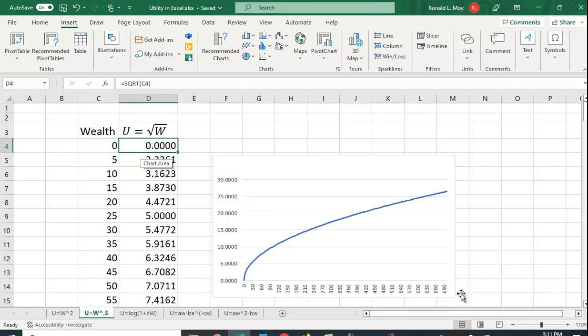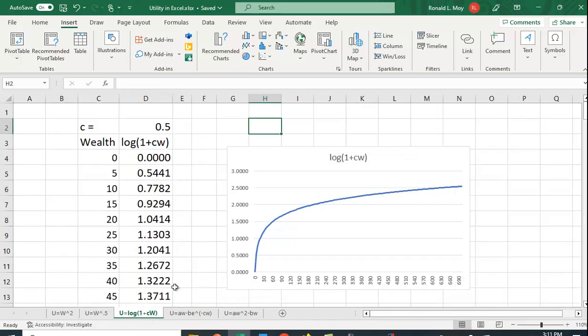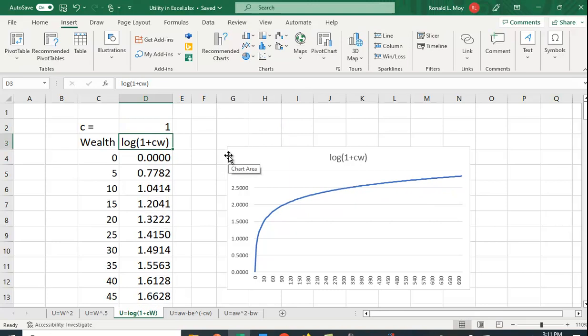How about some of those more complicated functions? Where wealth is a function of the log of 1 plus CW. And again, I've plotted it. And we can see here that this is going to be a person who is risk averse. And in fact, I put C up here. But you can change C to see how the shape changes.